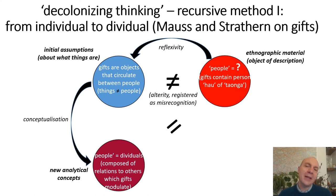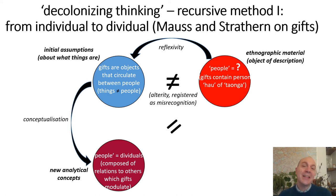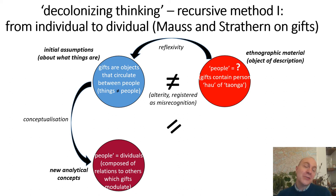According to the decolonizing line of thinking I'm developing, this is the reflexive moment: when you realize you've landed in a conceptual muddle and your best attempt to describe Maori material issues a misdescription, a misrecognition, a contradiction. What you are then required to do is rethink your own categories — and that is exactly what Marilyn Strathern does in 'The Gender of the Gift.'